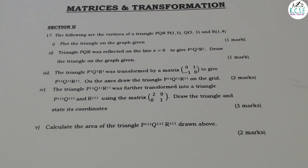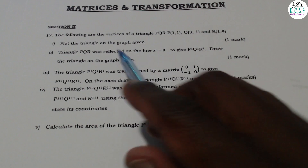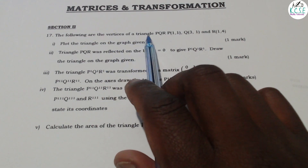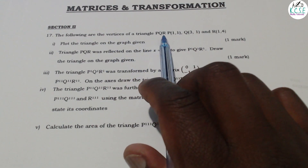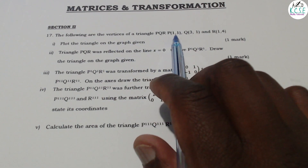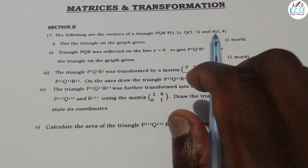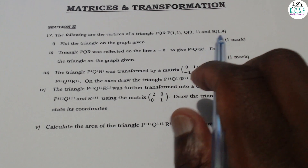Welcome to matrices and transformation. The following are the vertices of triangle PQR: P(1,1), Q(3,1), R(1,4).